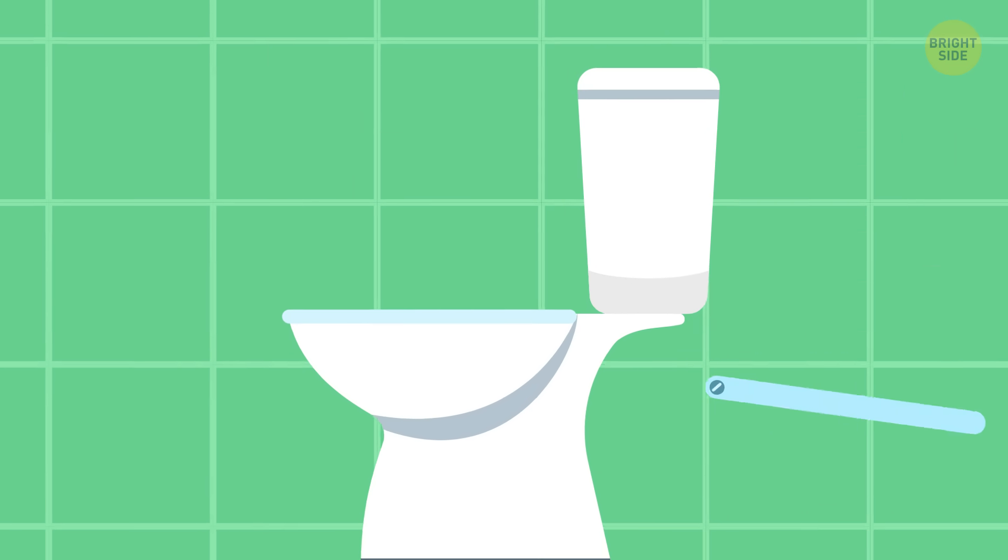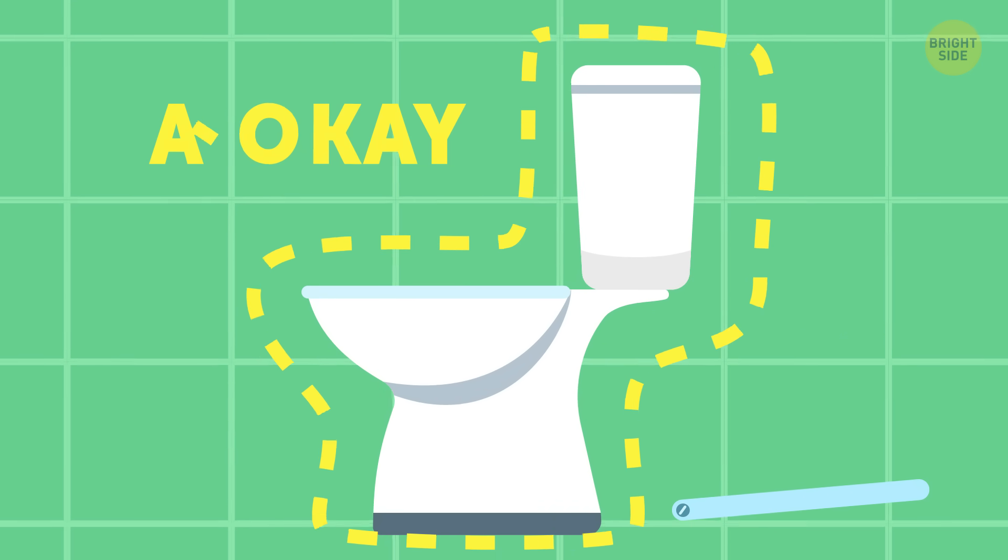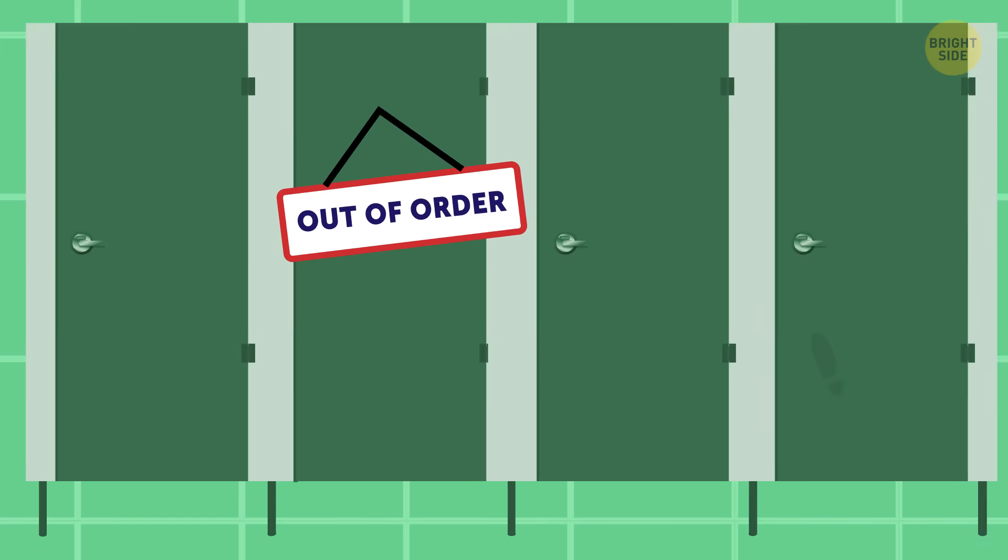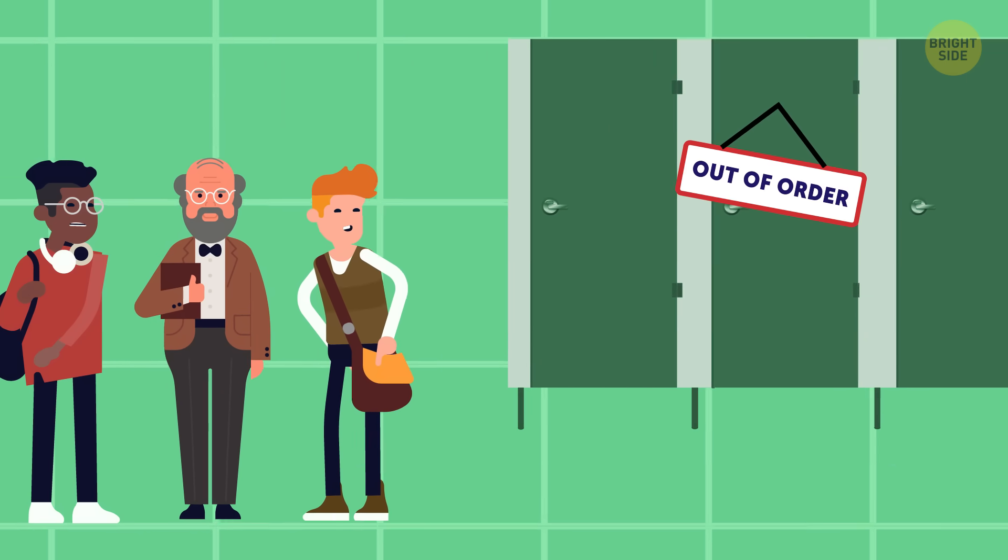All too often, the hinges break. Then, even though the other parts of the toilet are functioning A-OK, the whole contraption is marked out of order. One less toilet makes that too-long line even longer.